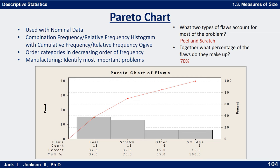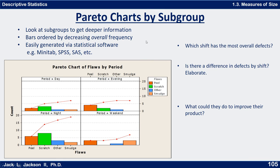So that's a Pareto chart. You can actually get even more information if you dig a little deeper. If this company has four shifts, we can further analyze this using statistical software such as Minitab or SPSS to produce a diagram that is actually four different Pareto charts, isolated by shift.